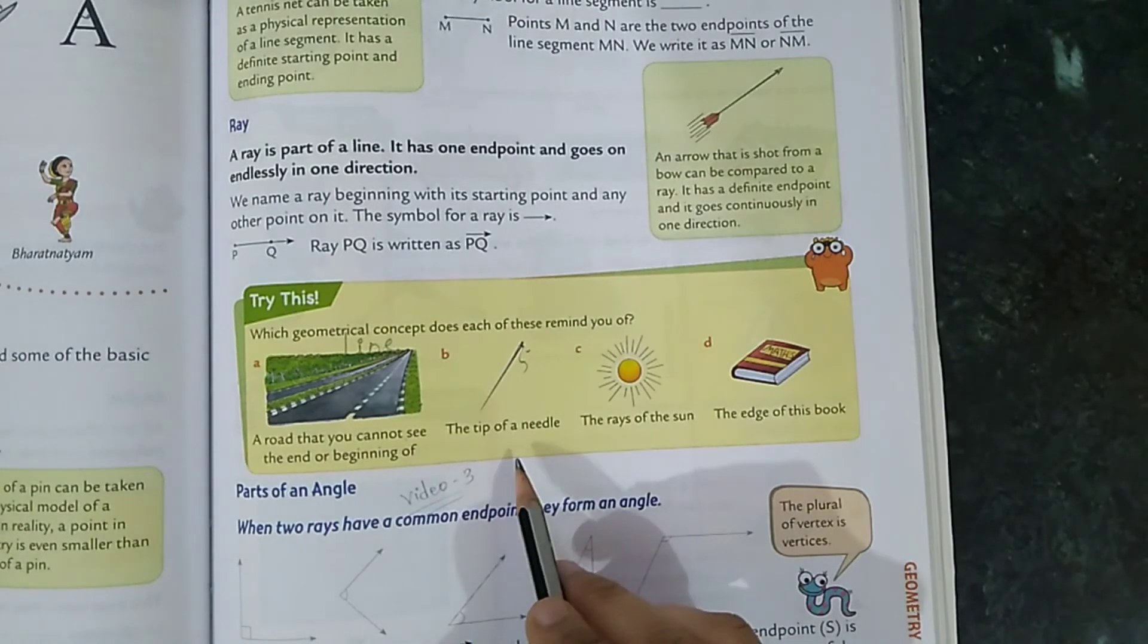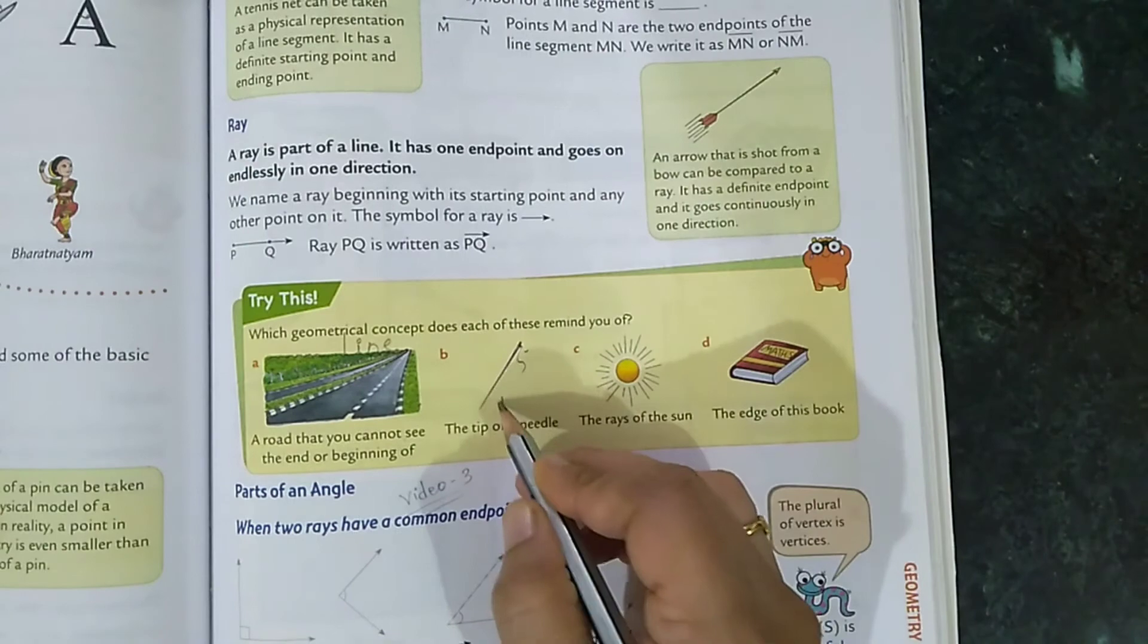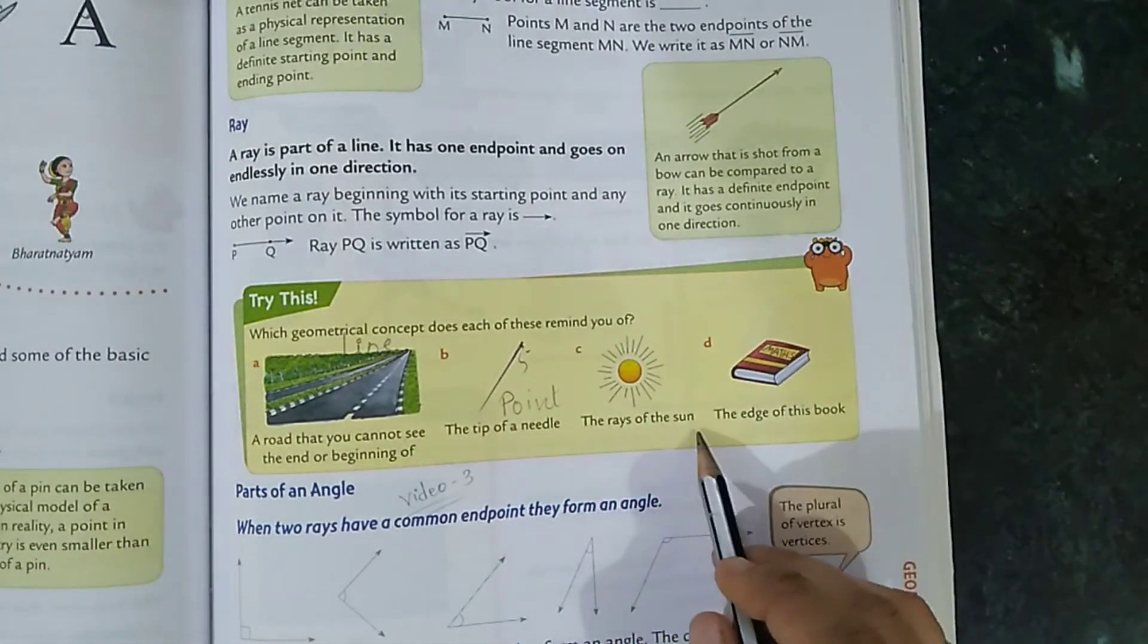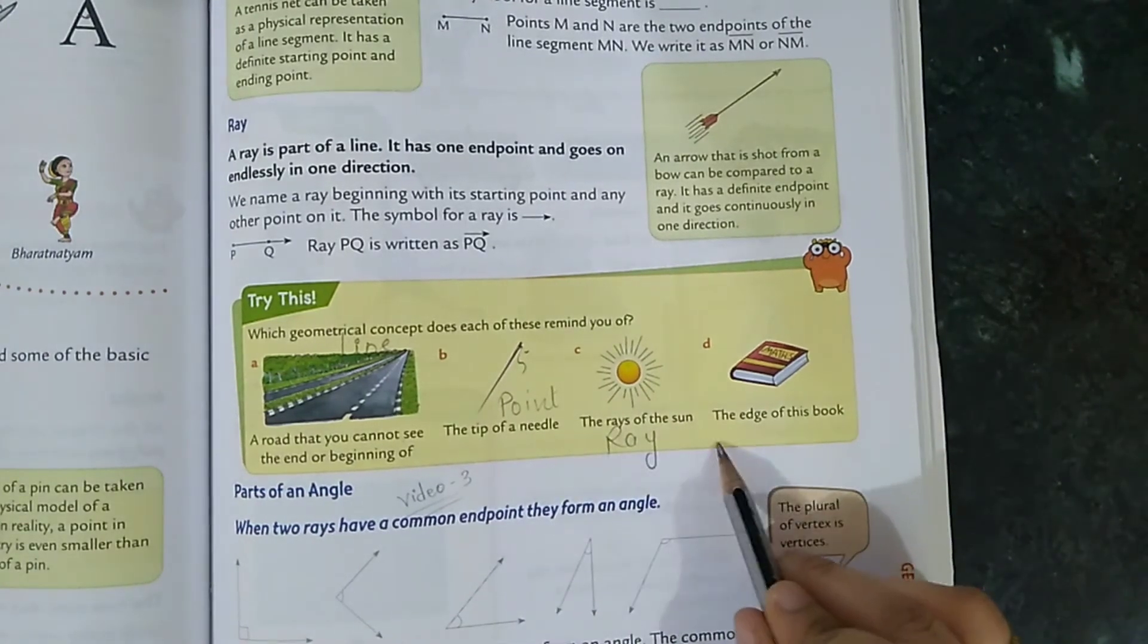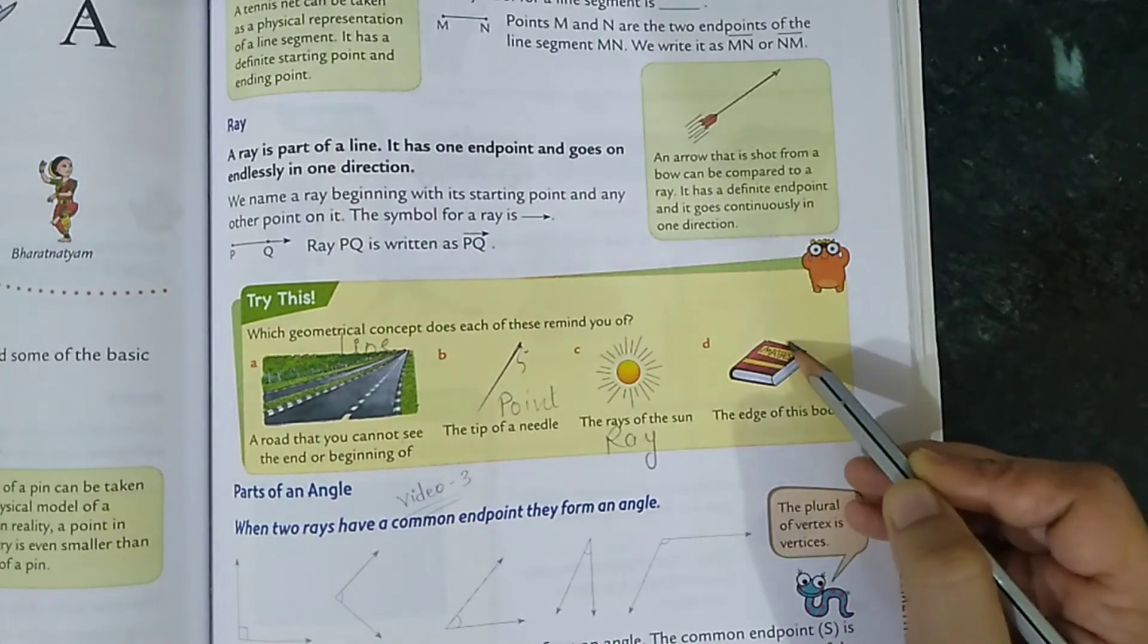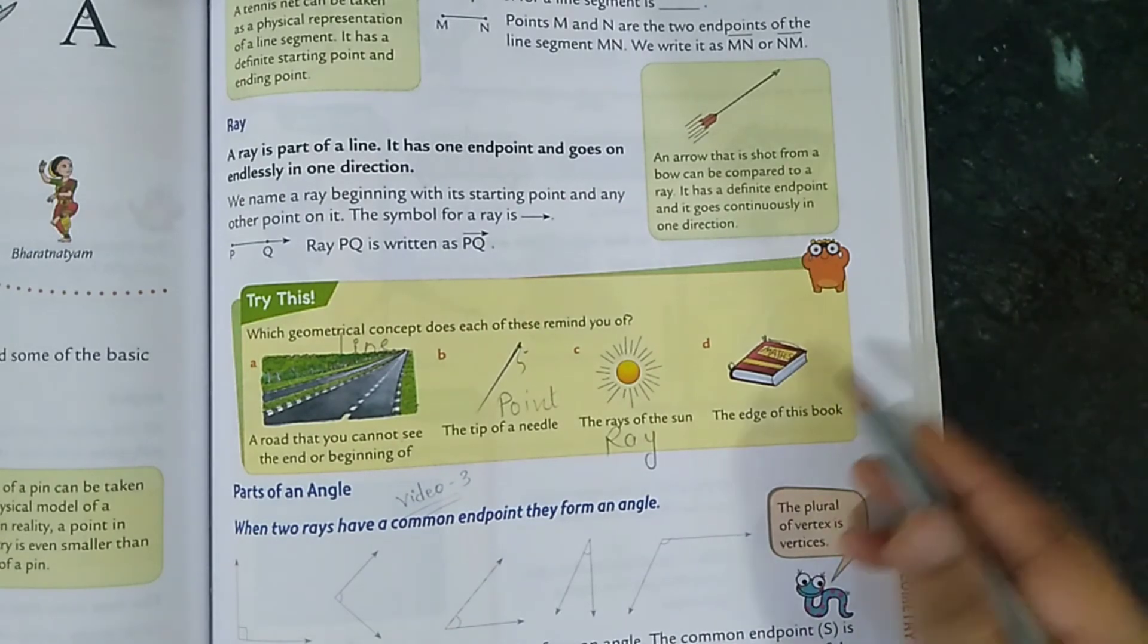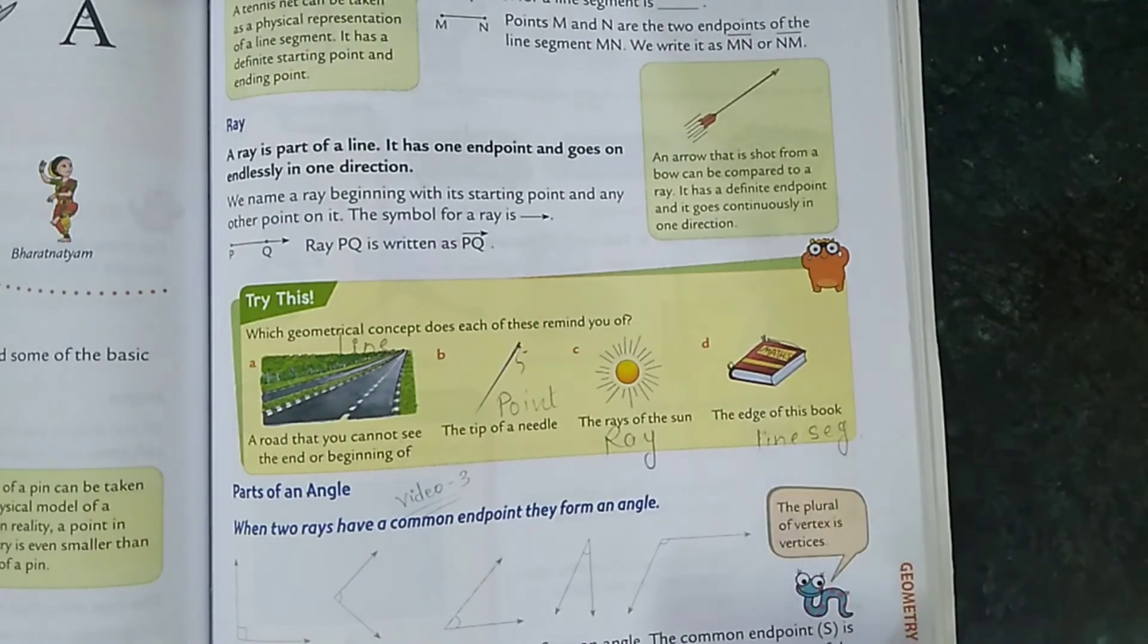The rays of the sun. I just told you this can be a ray, right? The edge of this book. See, this is the edge. It starts here, ends here. So what is this? Line segment. Understood.